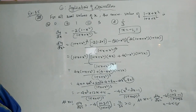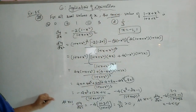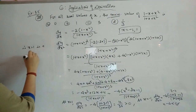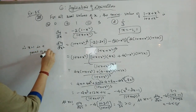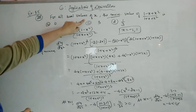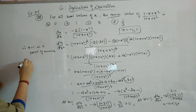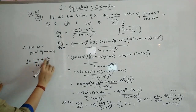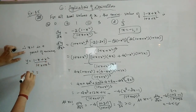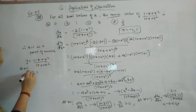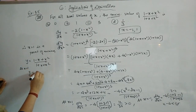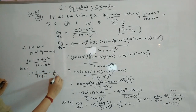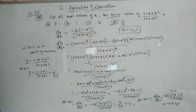So x = 1 gives d²y/dx² > 0 (minimum) and x = -1 gives d²y/dx² < 0. To find the minimum value, we substitute x = 1 into y = (1 - x + x²)/(1 + x + x²): y = (1 - 1 + 1)/(1 + 1 + 1) = 1/3. Therefore, the minimum value is 1/3 and option D is correct.